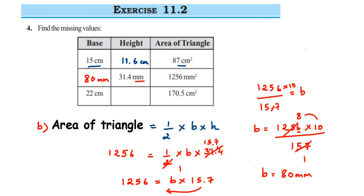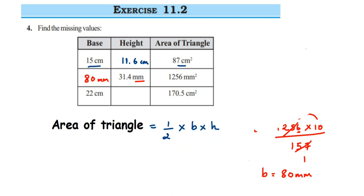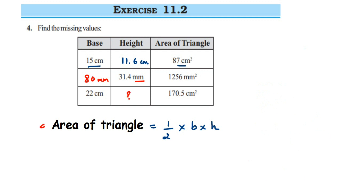The last question is similar to the first — height is missing, and base and area of the triangle are given. Base = 22 and area = 170.5. Substituting into the formula: 170.5 = ½ × 22 × h. Since ½ × 22 = 11, this simplifies to 170.5 = 11 × h.